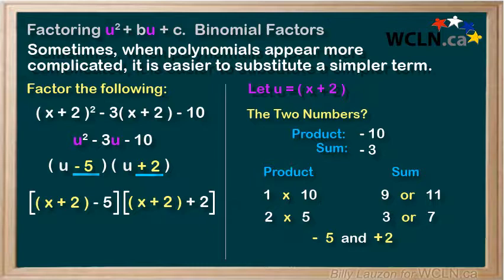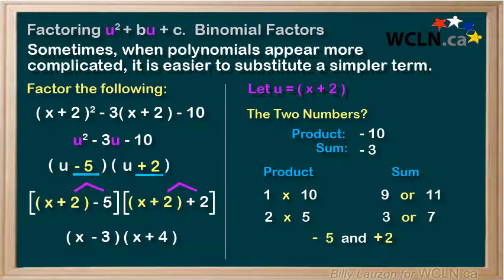For the last step, we'll need to simplify within the brackets. X plus 2 minus 5 would give us x minus 3, and x plus 2 plus 2 would give us x plus 4. We have now factored this polynomial.